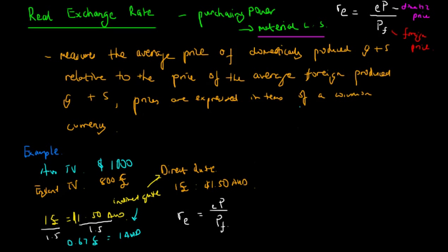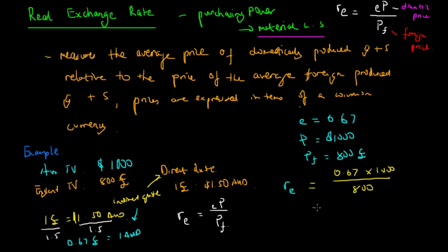So the exchange rate is 0.67, P (domestic) is $1,000, and PF (foreign) is 800 pounds. We just plug it into the real exchange rate formula, and we get the real exchange rate is equal to 0.67 multiplied by 1,000 over 800. If you plug it into the calculator, you should get around 0.83 recurring, which we approximate to 0.83.